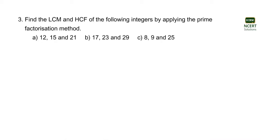Hello students, here we are with the third question of Exercise 1.2 for the chapter Real Numbers. The question asks us to find the LCM and HCF of the following integers by applying the prime factorization method. Three numbers have been provided in parts A, B, and C. Now let us come to part A.